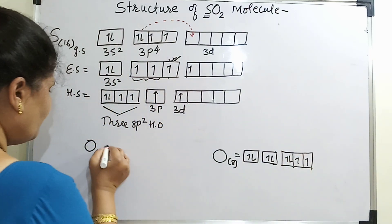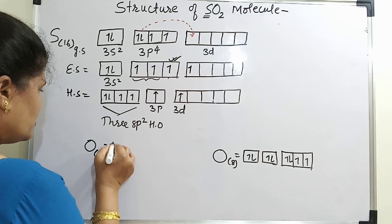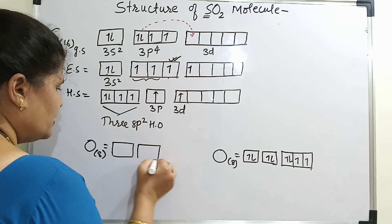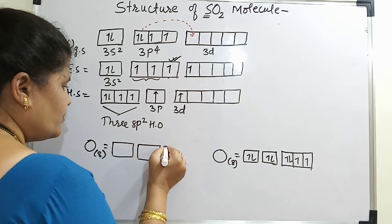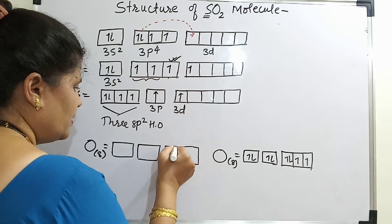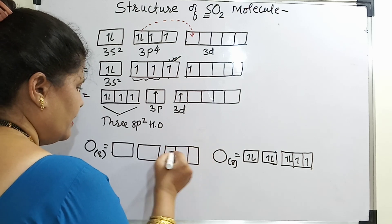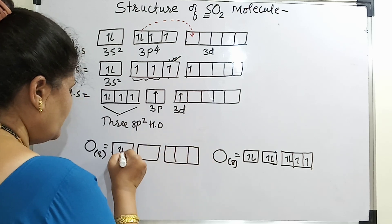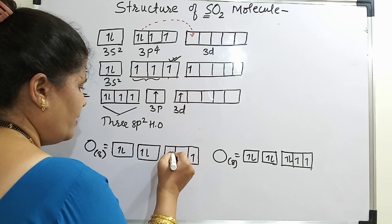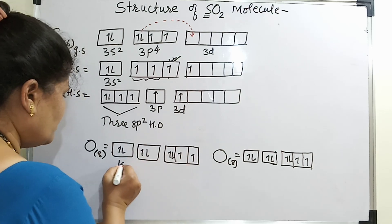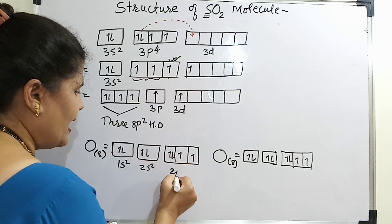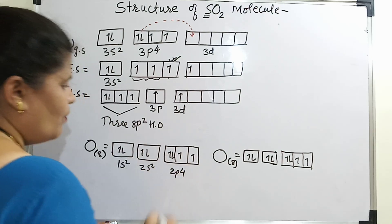This is the way you fill the electrons. So this is your 1s2, 2s2, so 1, 2 and 1, 1, 1 and 1. This is your 1s2, 2s2 and 2p4.